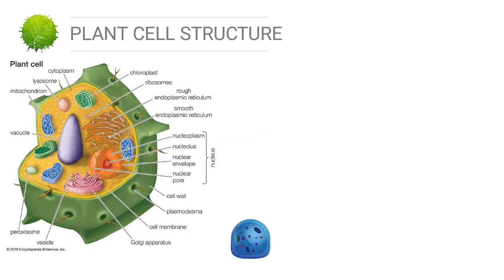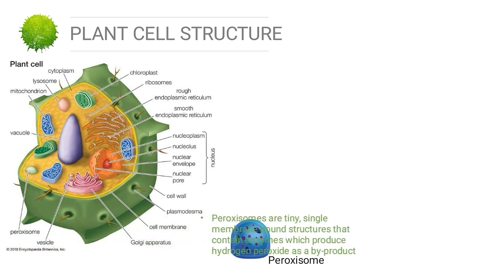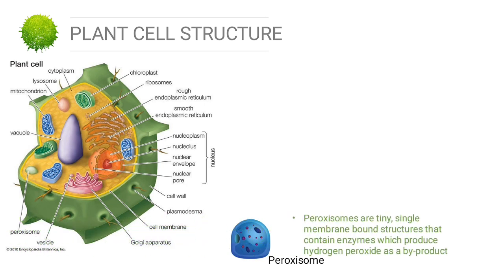The next organelle is the peroxisome. Peroxisomes are thin, single membrane-bound structures that contain enzymes which produce hydrogen peroxide as a byproduct.